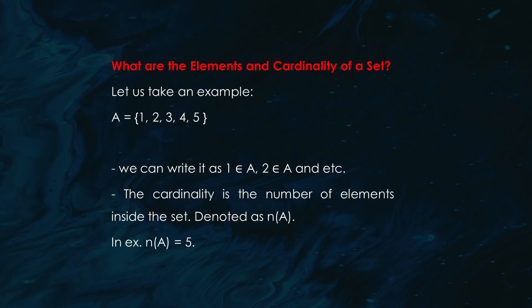Let's say you have set A = {1, 2, 3, 4, 5}. Each number here is an element of the set, and we can say things like '1 is an element of A,' meaning 1 is part of set A. How many elements are there in total? That's called the cardinality of the set. For this example, the cardinality of A, or n(A), is five.